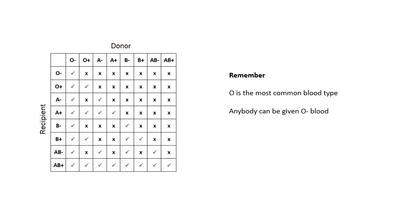You can't just get blood from anybody. You don't need to learn the compatibility table — you may be given it in the exam and have to interpret it — but remember that O is the most common blood type and anybody can be given O negative blood. When donating, the hospital is most happy to receive O negative blood because they can give it to anybody.